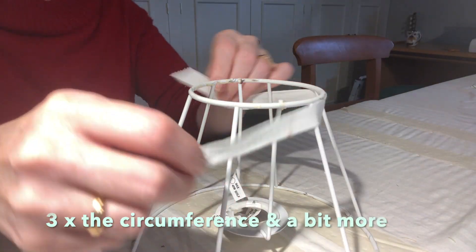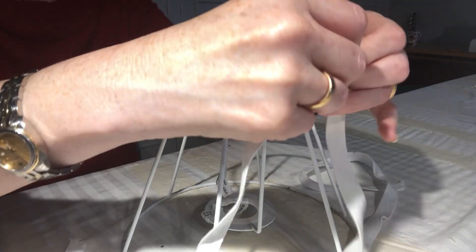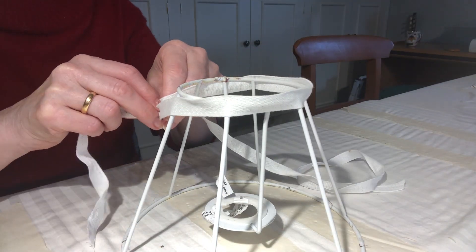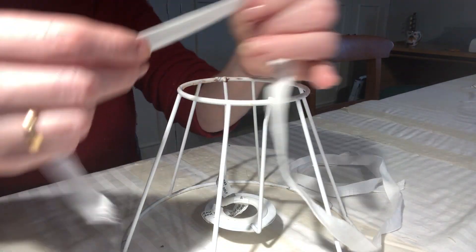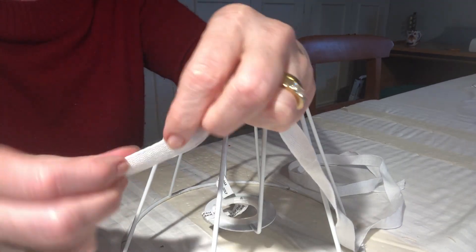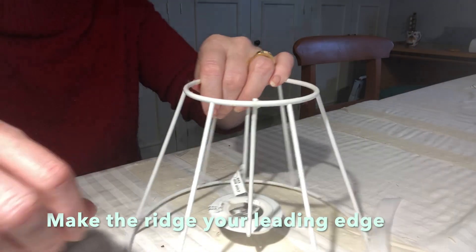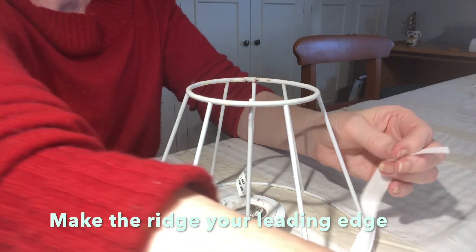I usually find that three times the circumference of the top ring and a bit more gives me just enough tape to complete the top ring. For binding the bottom ring, you will need to join tape on. If you run your fingers across the India tape, you'll feel a slight ridge to one side.